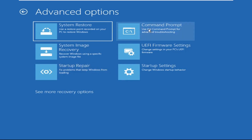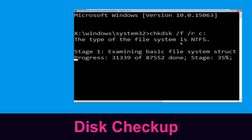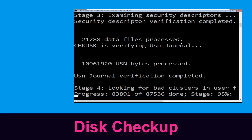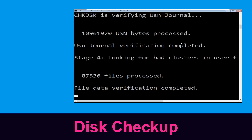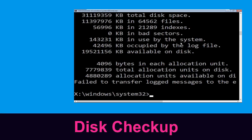Now type: chkdsk /f /r C: and hit Enter. We need to wait for some time to complete the process. Once done, move to the next step.